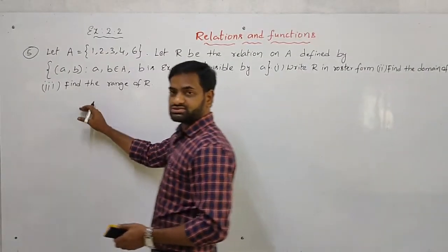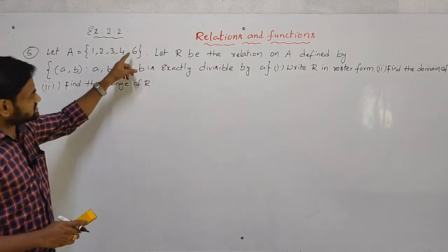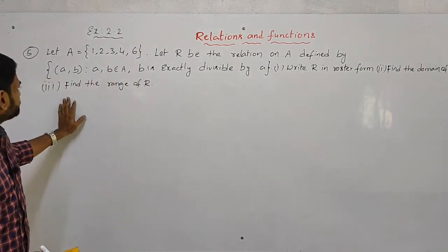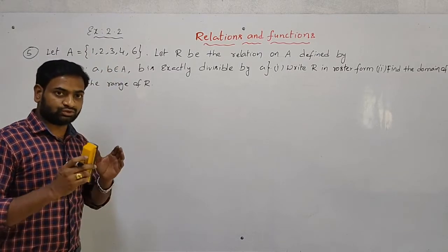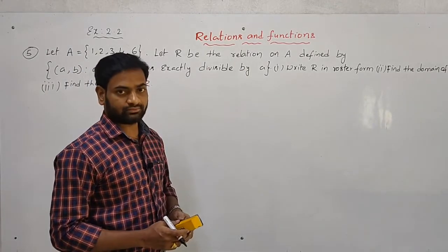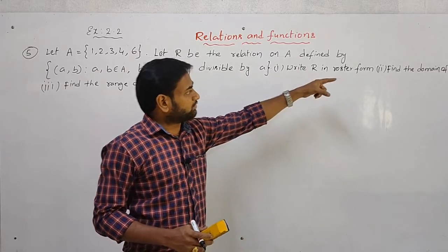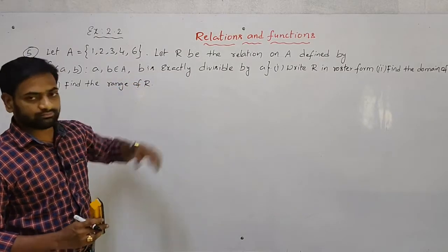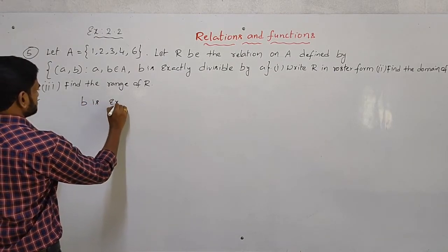Problem 6: Let A = {1, 2, 3, 4, 6}. Define relation R on A as (a, b) such that both a and b belong to set A and b is exactly divisible by a. We have to write this relation in roster form and find the domain and range. The condition is: b divided by a must be a whole number, meaning b is exactly divisible by a.